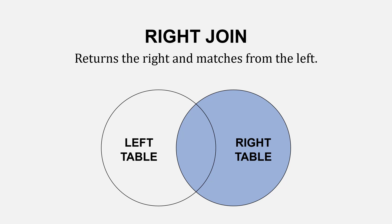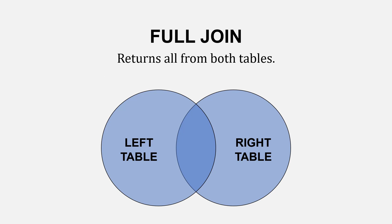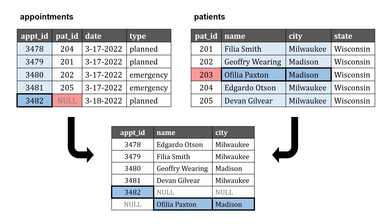With the right join, it's the opposite of the left — we return everything from the right and matches from the left. So we get everything from the patients table, including patient ID 203. But from the left table, we only get where the overlap is. In our results, we see information for patient 203, Ophelia Paxton, in Madison, but the appointment ID is null because there's no appointment for that patient. A full join returns everything from both tables — so you get both the null patient ID case and patient 203, with some null values where data is missing.